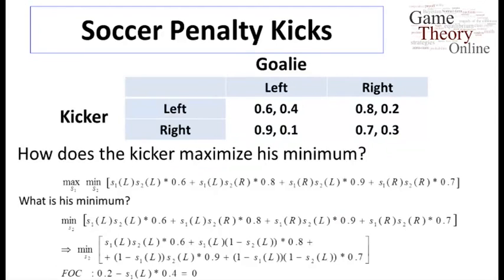So, let's think about it first from the kicker's point of view. Here is the expression that the kicker is trying to max min. We have his strategy, S1, and the strategy of the goalie, S2, and each strategy confers a certain probability on left or right, some probability between 0 and 1. And if we decently describe the probabilities of ending up in this cell, in which case the payoff to the kicker is 0.6, and each of these four expressions captures one of the different cells. We sum them up, we get the expected utility of the kicker given the strategies S1 and S2, and now we're trying to max min it.